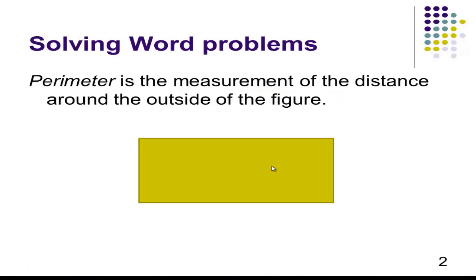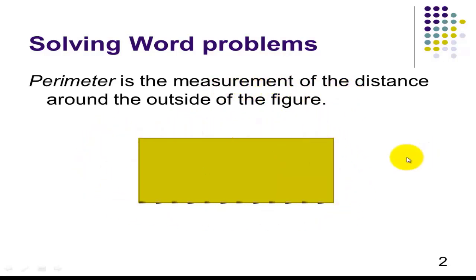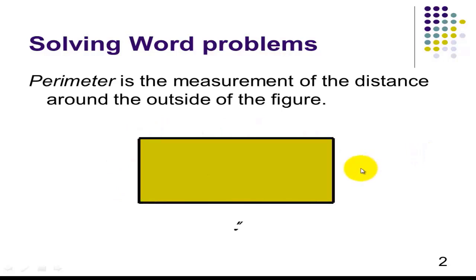Let's start with the definition of a perimeter. Perimeter is the measurement of the distance around the outside of a figure. If you have a rectangle, this will be your length. You have your width.